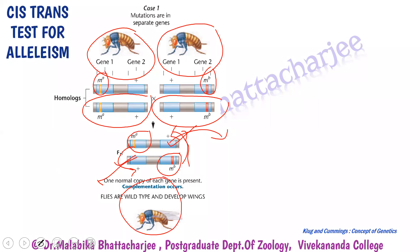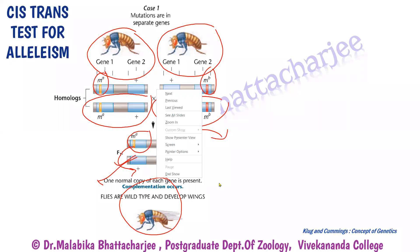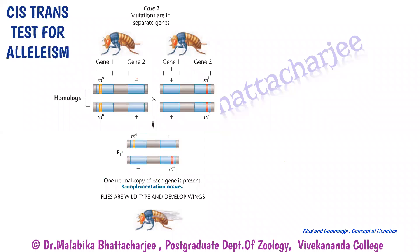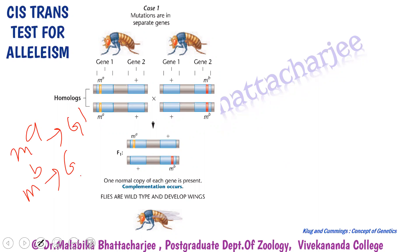The take home message from this cross is that if the mutations are not alleles of the same gene — since MA was sitting on gene one and MB was sitting on gene two — if such mutants are crossed, we get wild type flies because there is a normal, wild type copy of both mutations in the other chromosome in the F1 zygote.